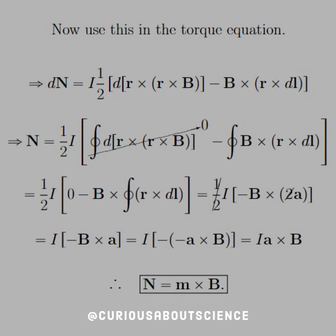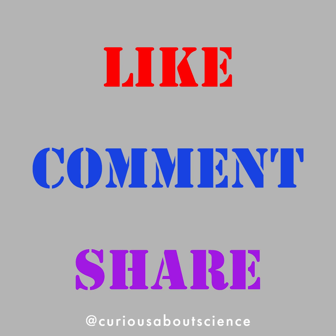With B being constant, the closed loop integral of R cross R cross B tends to zero. We're left with minus the contour integral of B cross R dotted with R cross DL. After accounting for the minus sign, we use the geometric result that the contour integral of R cross DL equals 2A. Canceling the twos, we get I times negative B cross A. By anti-commutativity with two minus signs canceling, we're left with IA cross B, which is indeed N equal to M cross B, where A is the vector area.